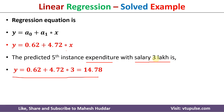So if the salary of an employee is 3 lakhs, his expenditure will be 14.78 thousands. This is the procedure to find the value of the dependent variable from the independent variable using the linear regression algorithm. I hope the concept is clear — if you like the video, do like and share, press subscribe and the bell icon for regular updates. Thank you for watching.